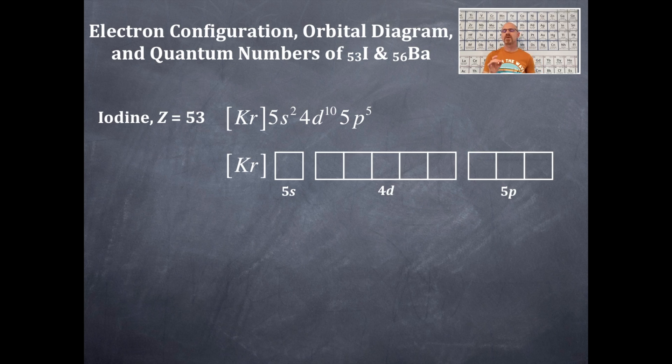Next is the orbital box diagram using the noble gas notation. I got krypton right there. One box for the s-type orbitals, five boxes for the Ds, and three boxes for the Ps. I've labeled them appropriately as 5s, 4d, and 5p, just like the electron configuration is.